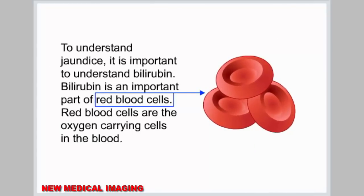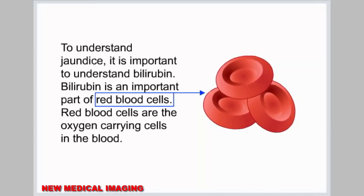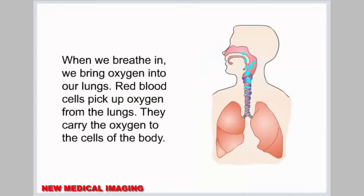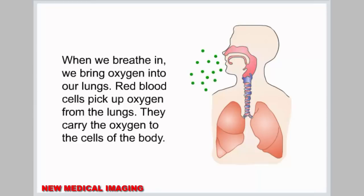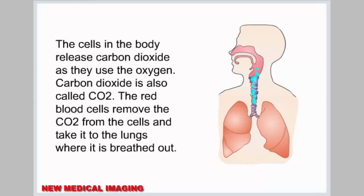To understand jaundice, it is important to understand bilirubin. Bilirubin is an important part of red blood cells — the oxygen-carrying cells in the blood. When we breathe in, we bring oxygen into our lungs. Red blood cells pick up oxygen from the lungs and carry it to the cells of the body. The cells release carbon dioxide, also called CO2, as they use the oxygen. The red blood cells remove the CO2 from the cells and take it to the lungs where it is breathed out.